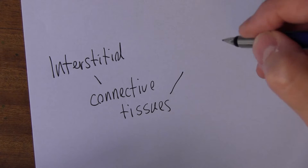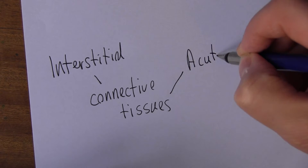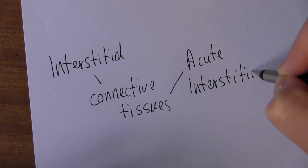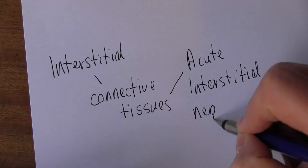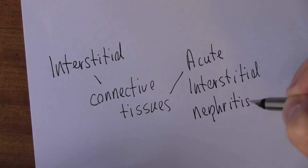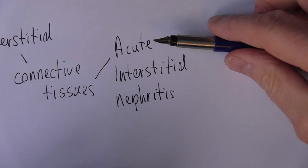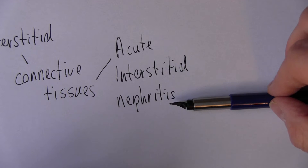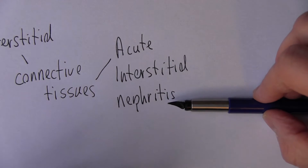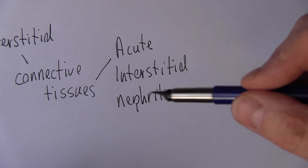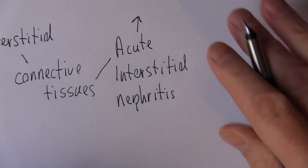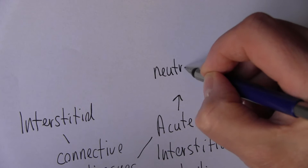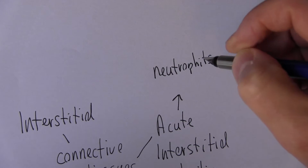This is often mediated through what's called acute interstitial nephritis. Acute means of recent onset; interstitial means the tissues in between the tubules and the glomeruli; and nephritis — 'neph' meaning kidney, 'itis' meaning inflammation. This often involves activation of immune cells, particularly neutrophils and eosinophils.